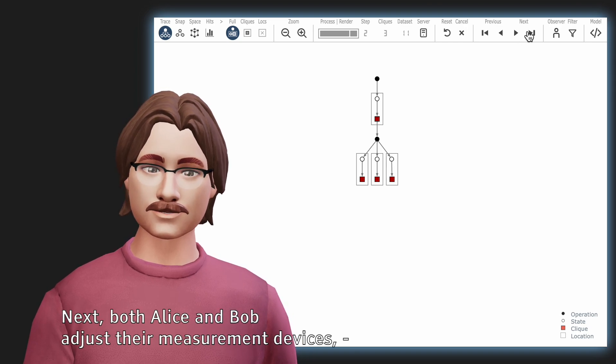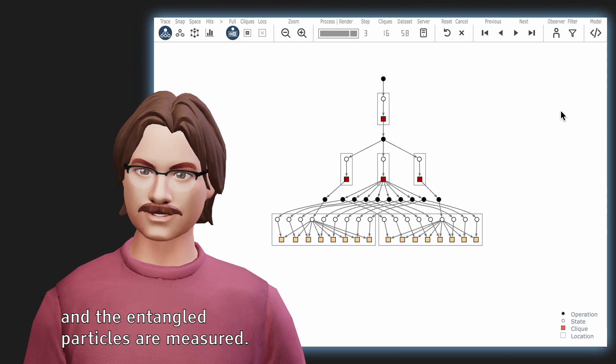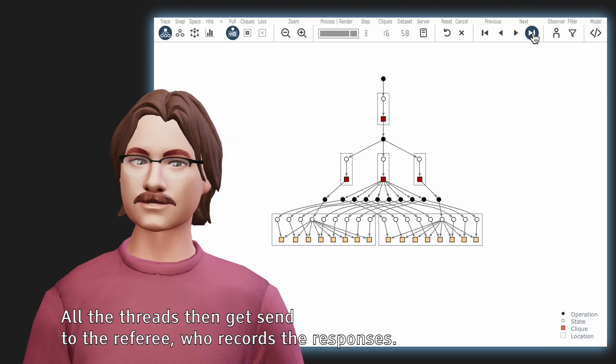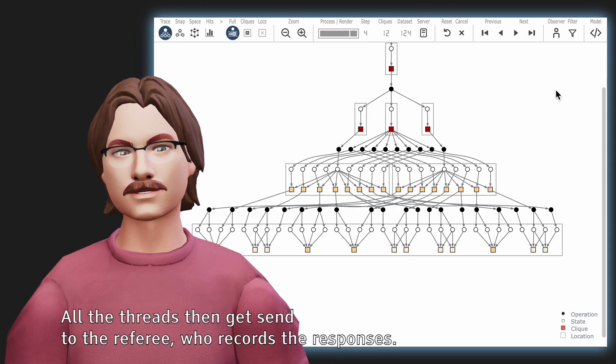Next, both Alice and Bob adjust their measurement devices, and the entangled particles are measured. All the threads then get sent to the referee, who records the responses.